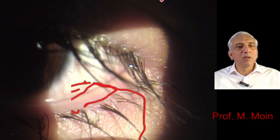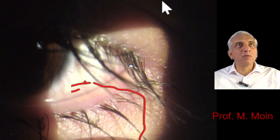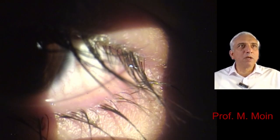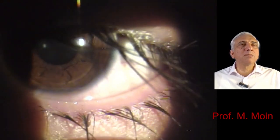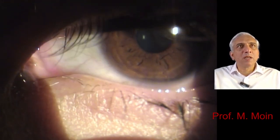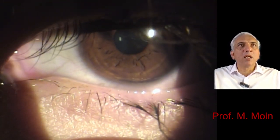This is the important distinguishing feature of staphylococcal blepharitis compared to seborrheic blepharitis. Patients with seborrheic blepharitis might also have dandruff on their head as well.